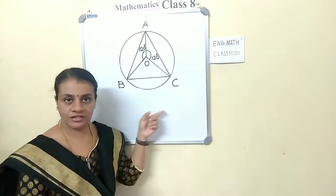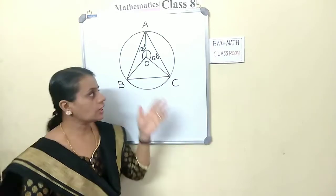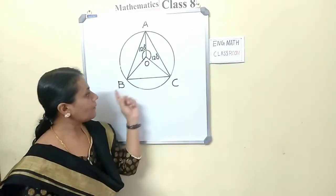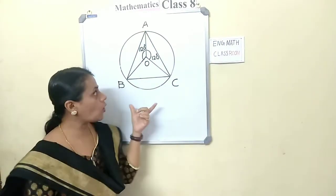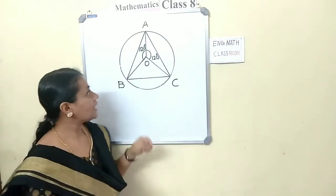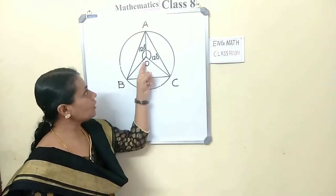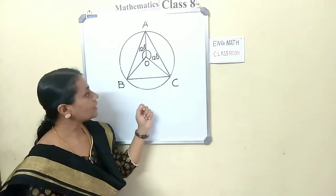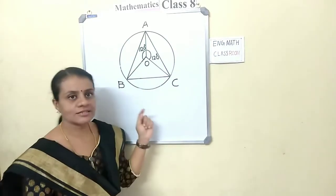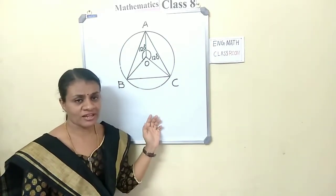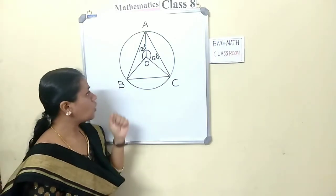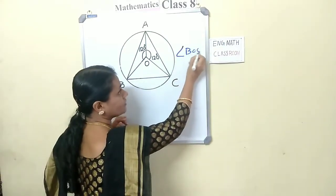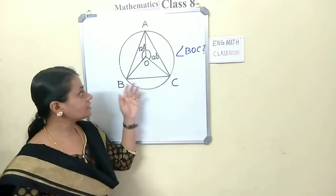This is the figure given in the question. The data is: O is the center of the circle, A, B, C are three points on the circle, angle BOA is 120 degrees, and angle COA is 120 degrees.